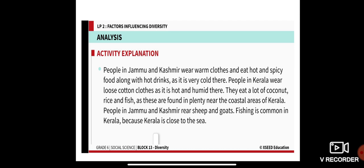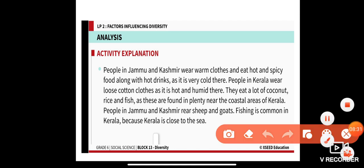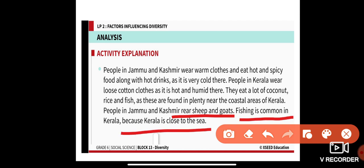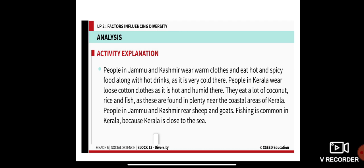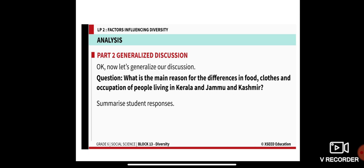People in Jammu and Kashmir rear sheep and goats — that is their main occupation. So, what is the main reason for the differences in food, clothes, and occupation of people living in Kerala and Jammu and Kashmir? What is actually the main reason for these differences in food, clothes, and the occupation people do to earn their living?